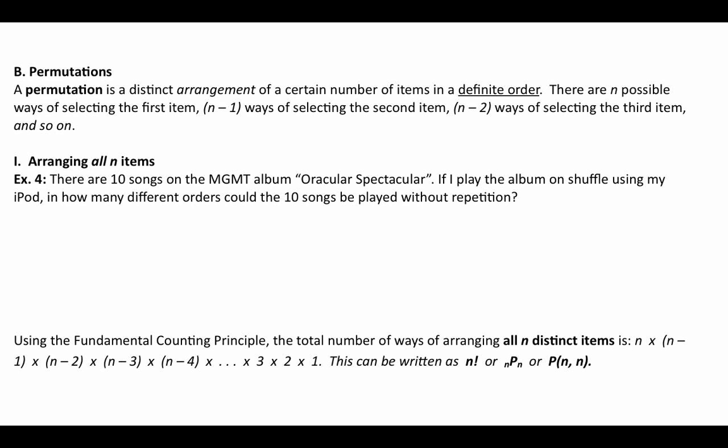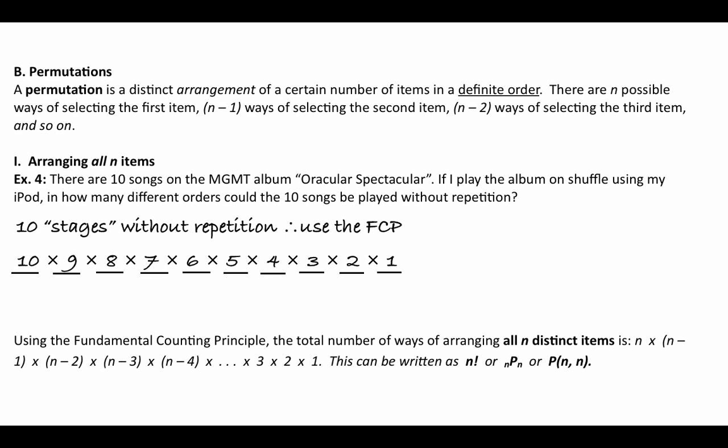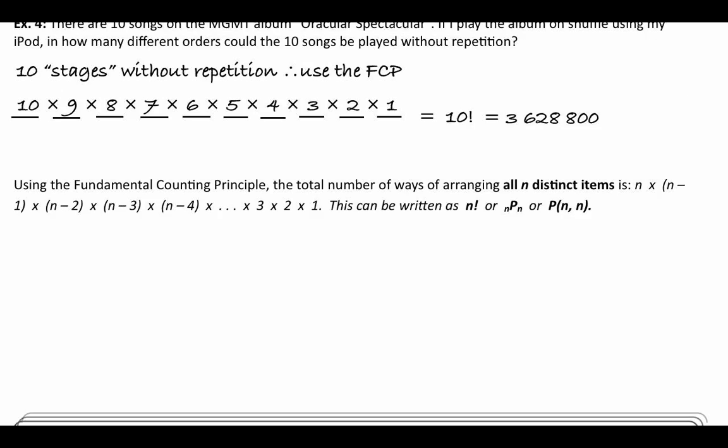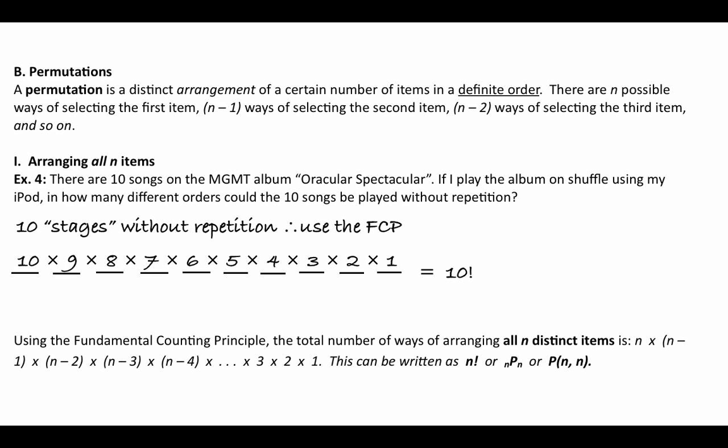Say there are 10 songs on the MGMT album Oracular Spectacular. If I play the album on shuffle using my iPod, how many different orders could the 10 songs be played without any repetition? I've got 10 stages, using up one song per position: 10 times 9 times 8 times 7 all the way down to 1 — that's just 10 factorial, which is 3,628,800. Using the fundamental counting principle, the total number of ways of arranging all n items is just n factorial.